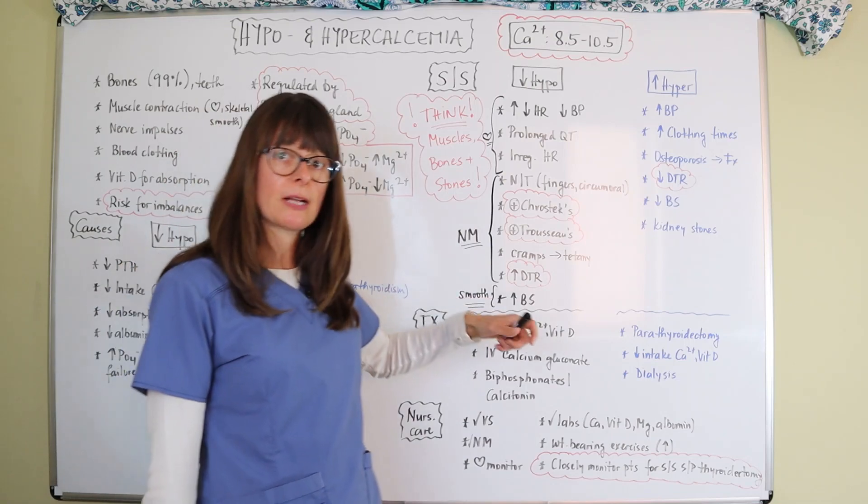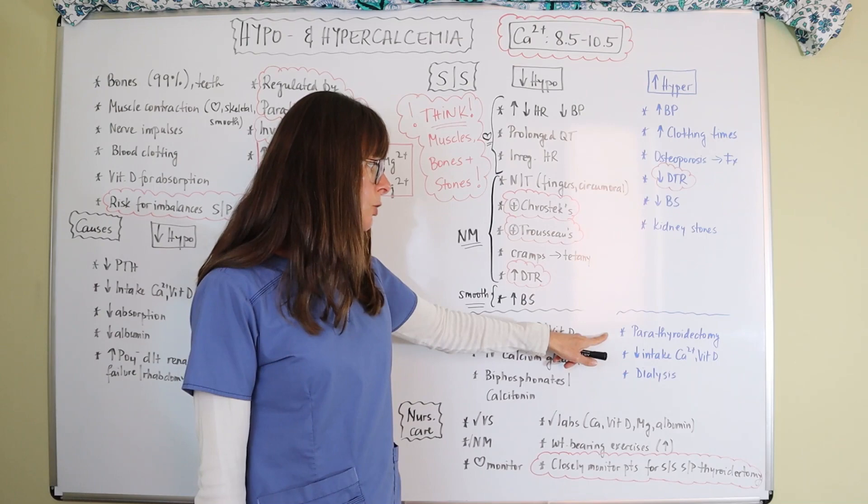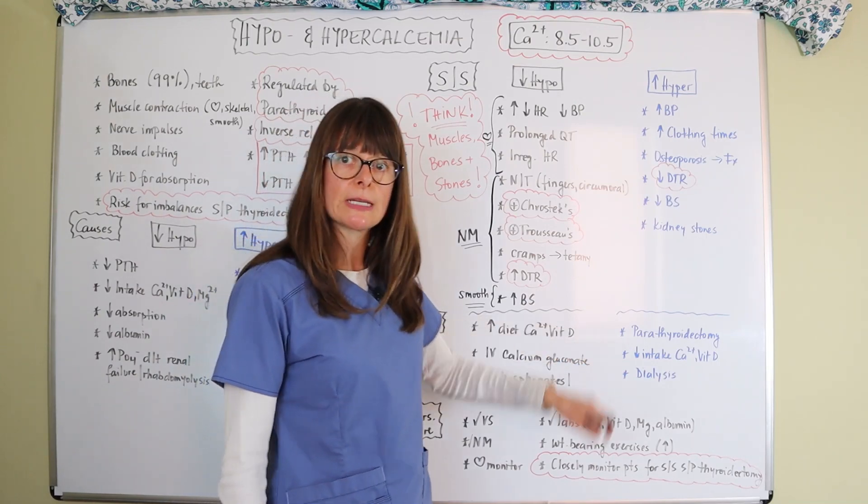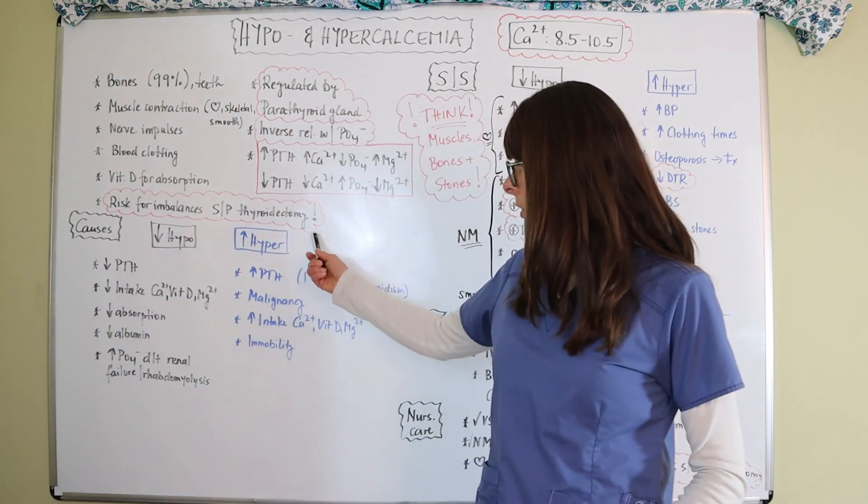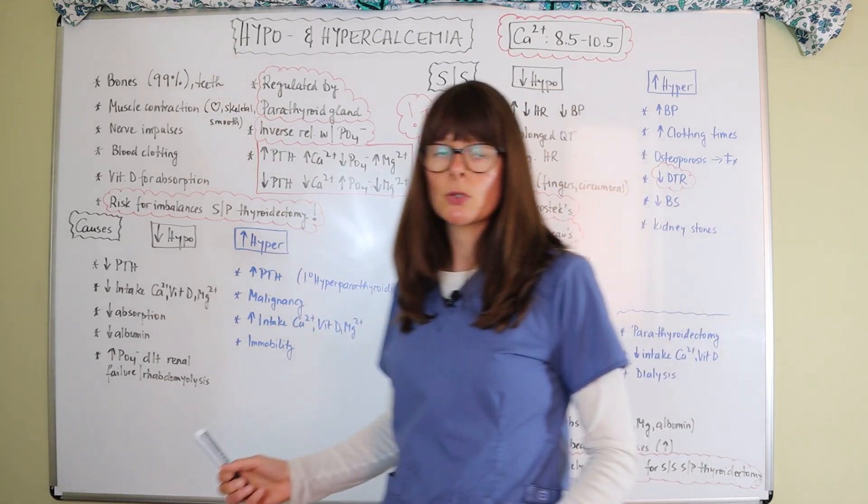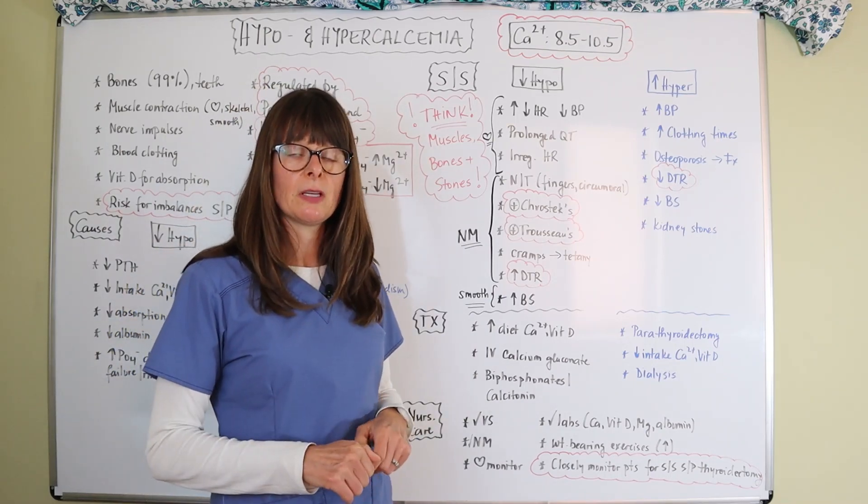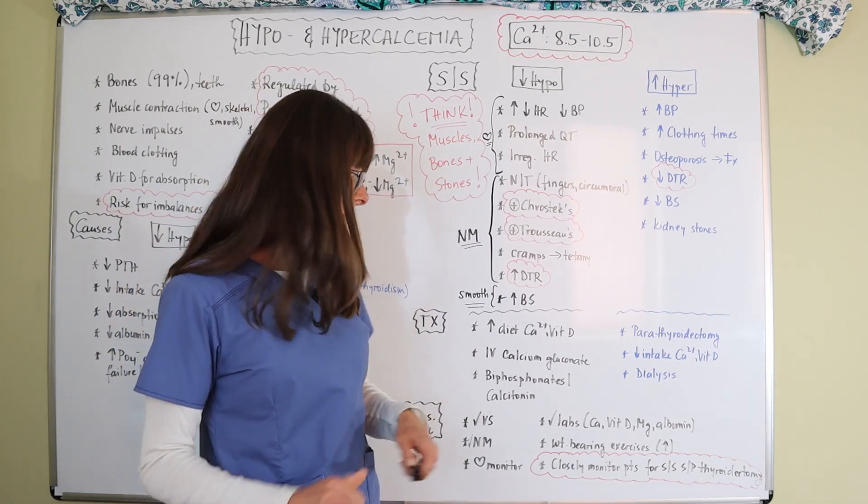On the other side, if we have hypercalcemia, so increased levels, the parathyroid gland might need to be removed. So parathyroidectomy, because we said over here, the number one reason is primary hyperparathyroidism. So if that is the case, then the gland has to be removed in order to regulate the calcium as well as phosphorus levels.